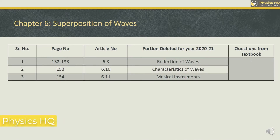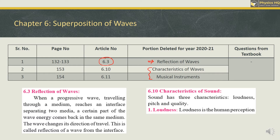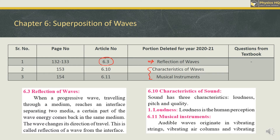For Superposition of Waves, reflection of waves — a theory topic — is deleted. Two other theory topics are also deleted: characteristics of waves including loudness, pitch quality, and musical instruments — the type of music. These are small theory topics with no associated questions.